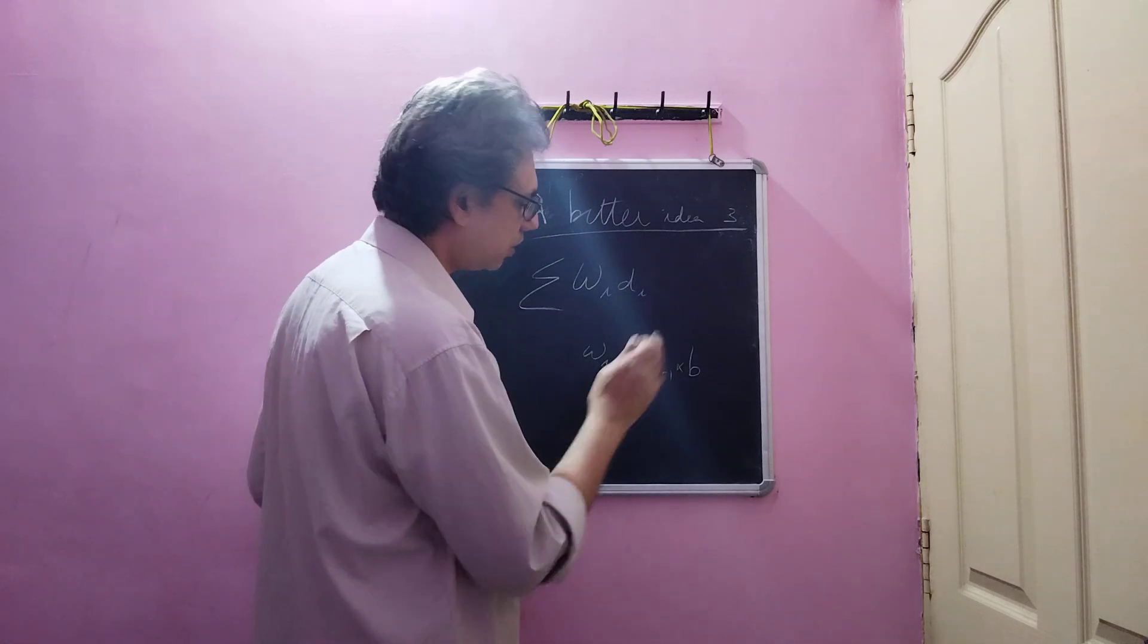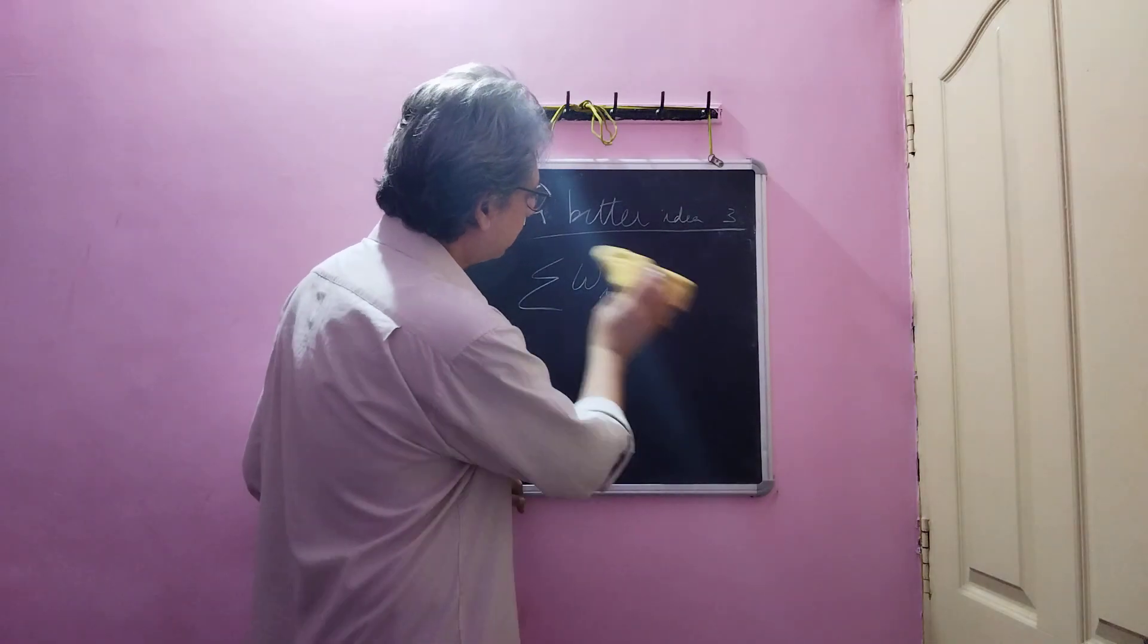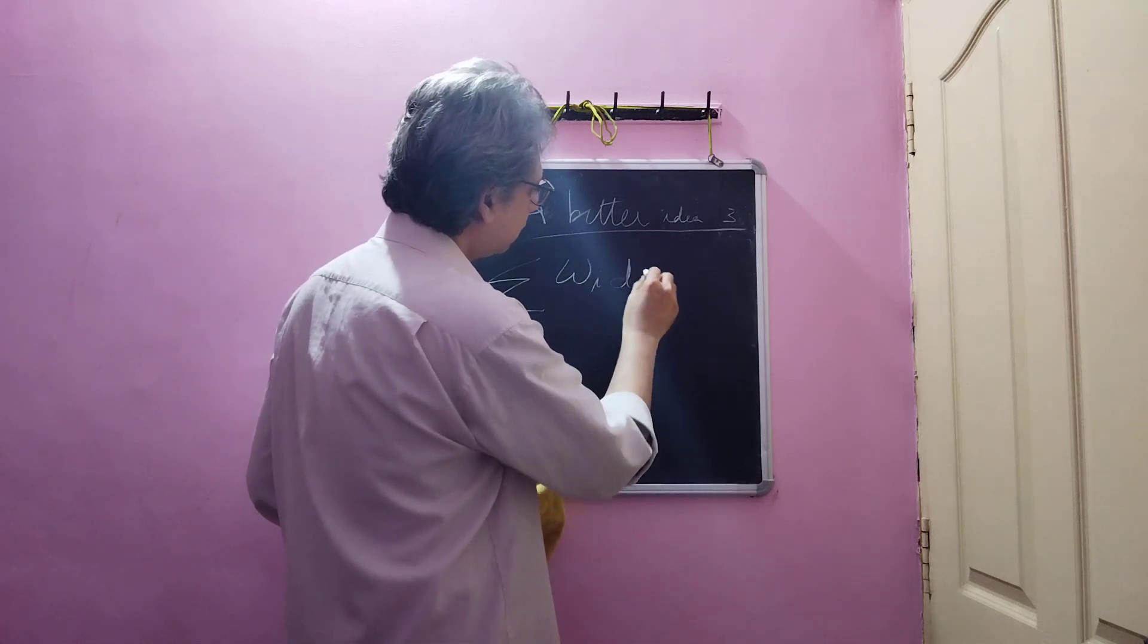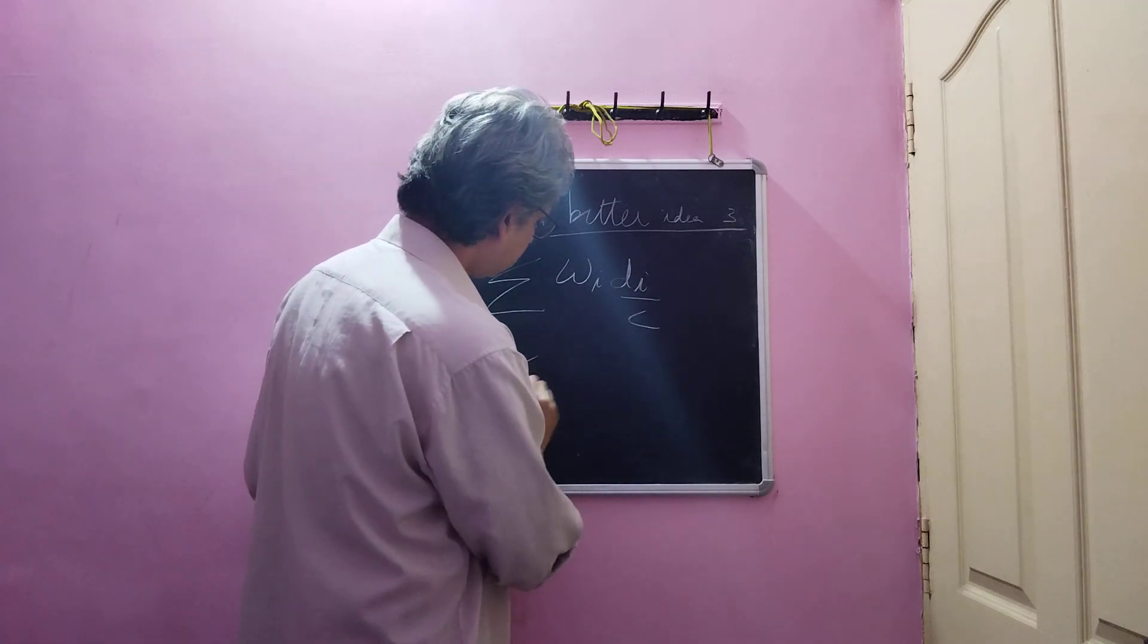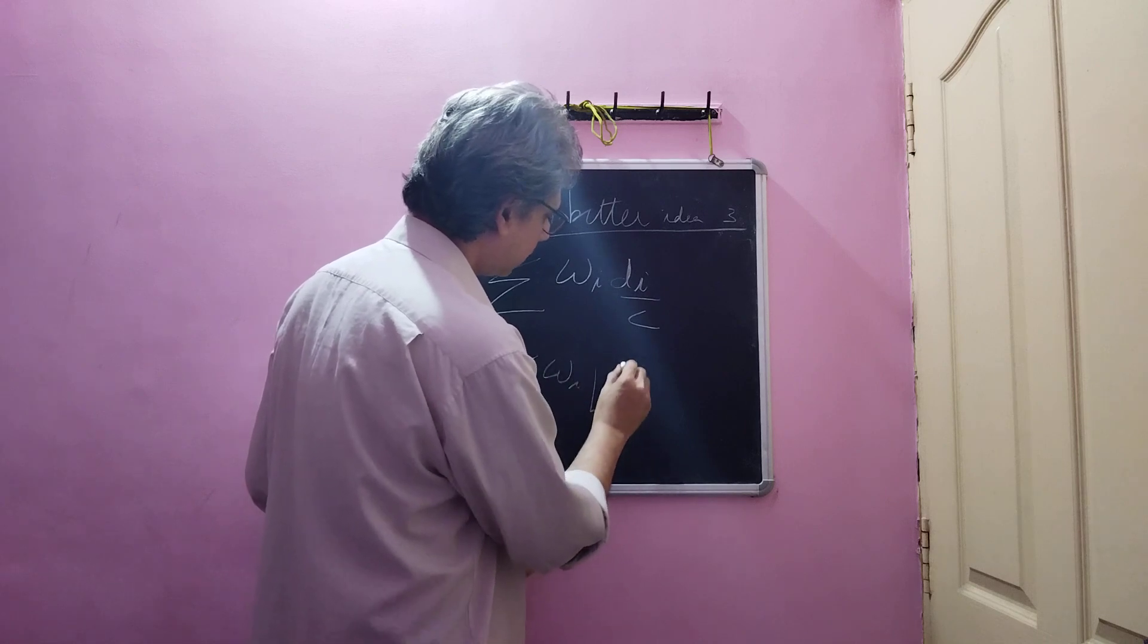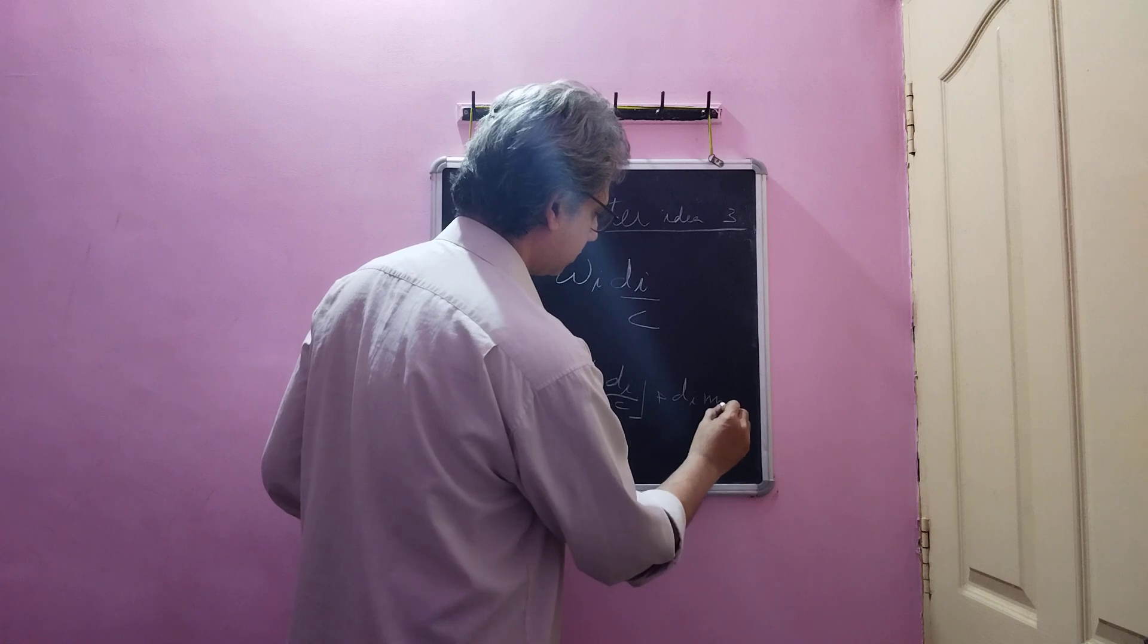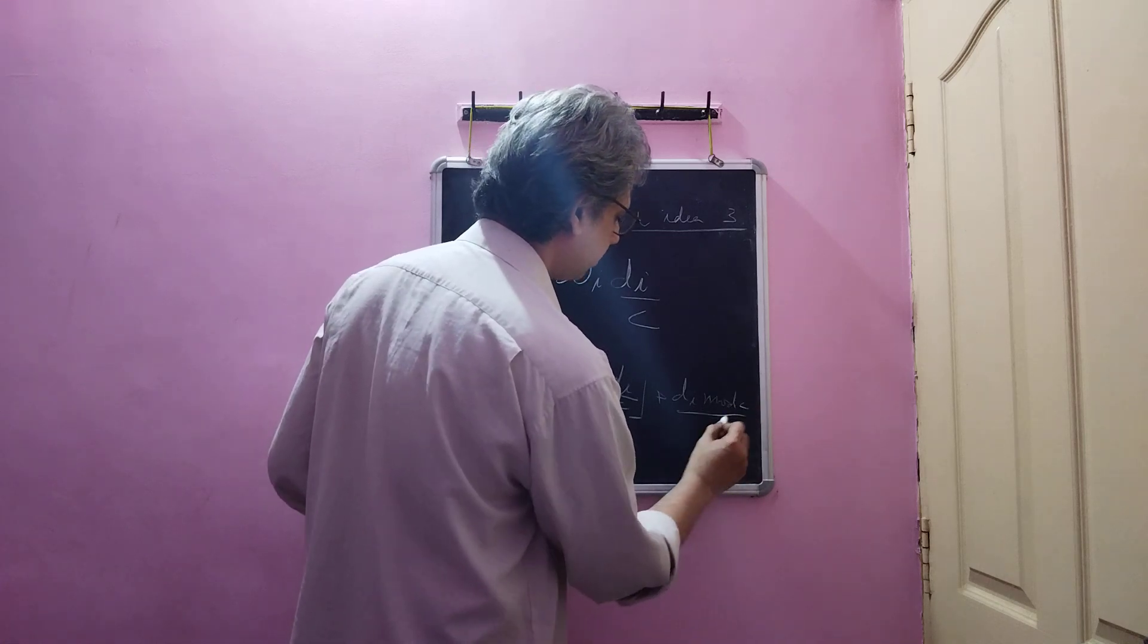Now if you wish to divide, reduce each of the digits by a constant c, we can do that readily as follows: summation wi di by c. Now this can be written as summation wi times floor of di by c plus di mod c by c.